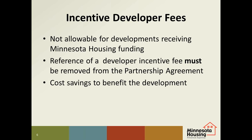The underwriting standards in Chapter 11, Section 3 outline the agency's policy on cost savings at the end of construction. If cost savings remain at the end of construction or rehabilitation, they may be deposited in the replacement reserve account, used to reduce Minnesota Housing funding, or be directed to another appropriate use for the benefit of the development. Any cost savings require Minnesota Housing's approval.